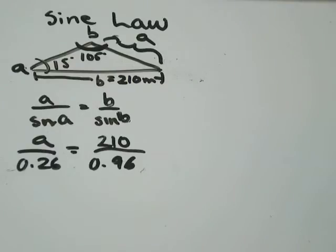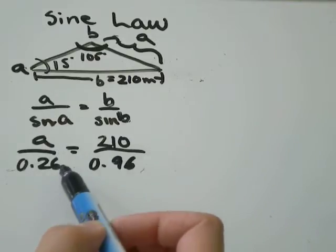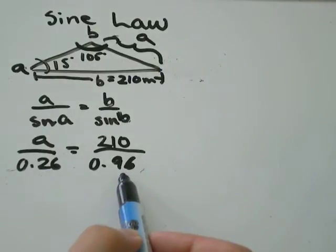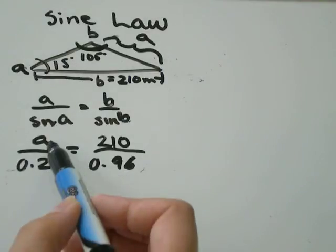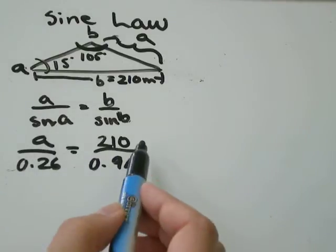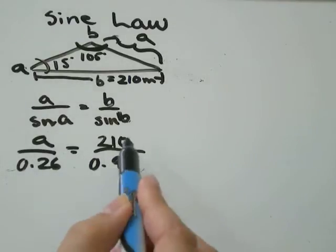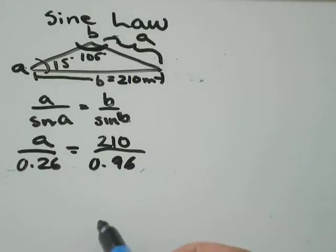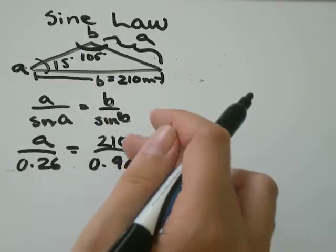All I need to do is solve for the one unknown in my equation. You can use cross multiplication if you want — you can go 210 times 0.26 equals whatever number, divided by 0.96, and that'll equal A. Or you can simplify the side of the equation without your variable first, which is what I'm going to show you. In my calculator I'm just going to type in 210 divided by 0.96, and I get that equal to 218.75.